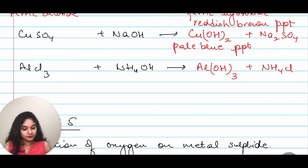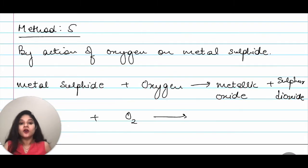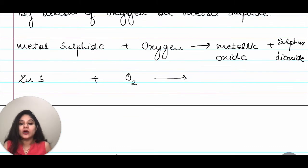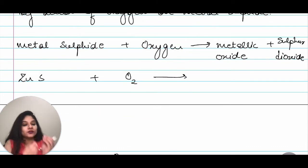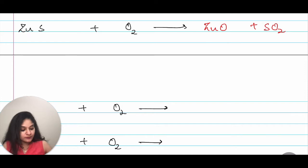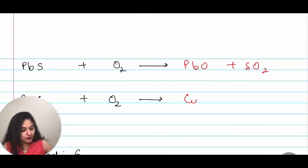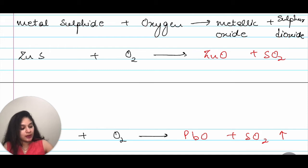Then, moving on we have by action of oxygen on metal sulfides. I have ZnS so metal sulfide plus oxygen giving me metal oxide plus sulfur dioxide. Very simple ZnS plus oxygen will give me ZnO plus SO2. This will give me PbO plus SO2 and this will give me CuO plus SO2 and this SO2 is a gas so you can put an upward arrow. Balancing the equations is your homework. Make sure that you mention that in the comment section if you are facing any issues with it.